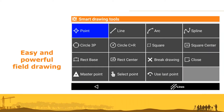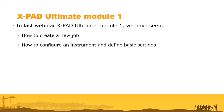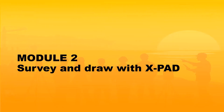XPad also supports online maps, powerful drawing tools, and integrated cloud. To recap Module 1: we covered how to create a new job, configure an instrument — GPS, total station, or robotic total station — define basic settings, survey some points, export data, and do a stakeout. Today we focus more on drawing.